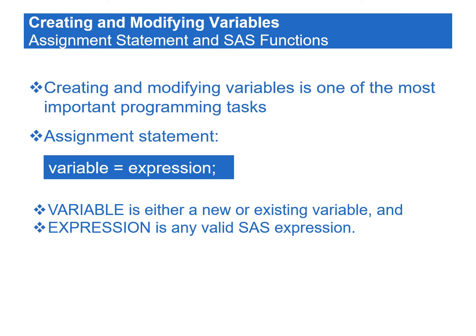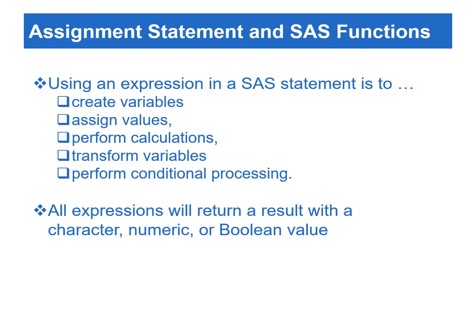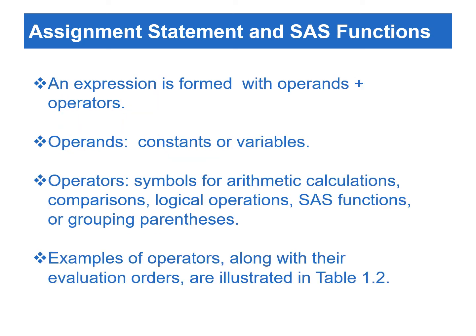After data is read into SAS, a common task is to create or modify existing variables from the input data. This section covers creating variables by using the assignment statement, and introduces how to create variables conditionally. In the assignment statement, variable is either a new or existing variable, and expression is any valid SAS expression. The purpose of using an expression is to create variables, assign values, perform calculations, transform variables, and/or perform conditional processing. All expressions will return a result with a character, numeric, or Boolean value. An expression is formed by a sequence of operands and operators. Operands are either constants or variables.